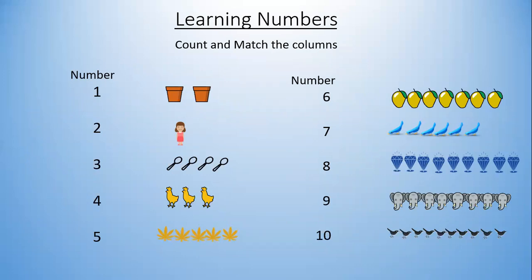Now we need to count and match the columns. Here: one — there are two pots, so we need to match two pots with the number it belongs to. Next is a girl — there is only one girl, so which number do we match it with? Can you count how many spoons? Try to count the number of chickens and match it. Try to count the number of flowers and mangoes.